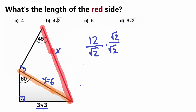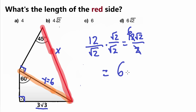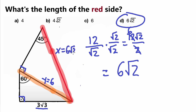Multiplying by √2/√2, the denominator becomes 2 and the numerator becomes 12√2. Now we can simplify: 12√2 / 2 = 6√2. So our answer is 6 times square root of 2, which is answer choice D. I hope you guys enjoyed this video — if you'd like to see more content like this, let me know in the comments. Thank you for watching, see you next time!